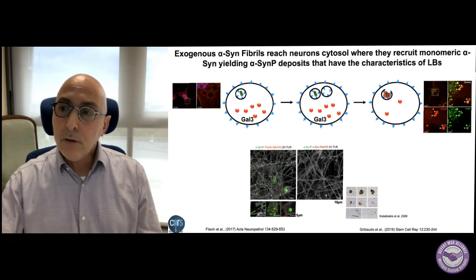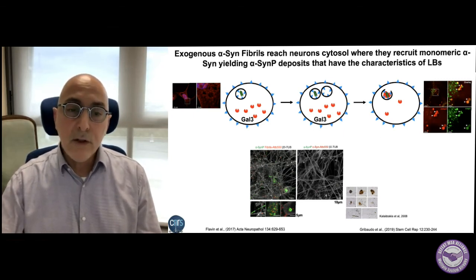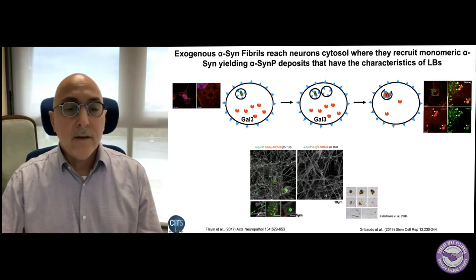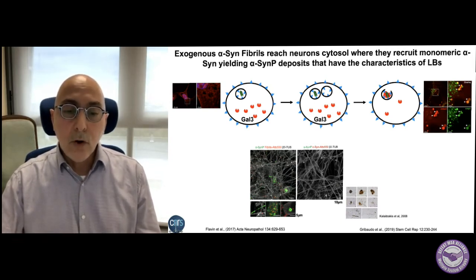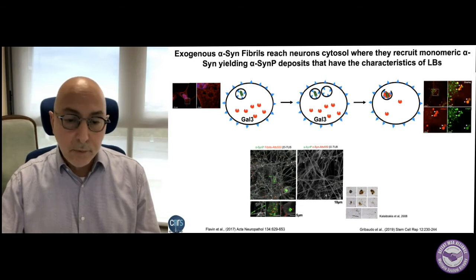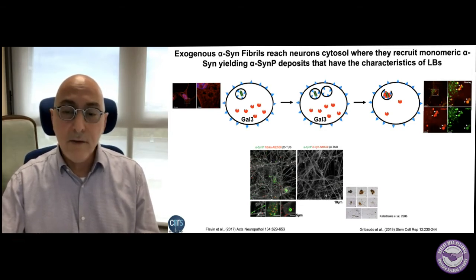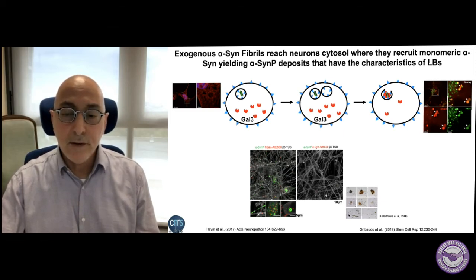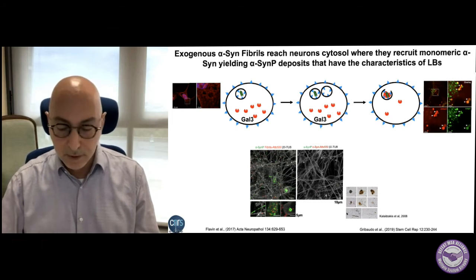This fraction of alpha-synuclein fibrils that reach the cytosol recruits the endogenous alpha-synuclein, and you can see the formation of clumps very similar to authentic Lewy bodies and Lewy neurites that we observe in the brain of patients.